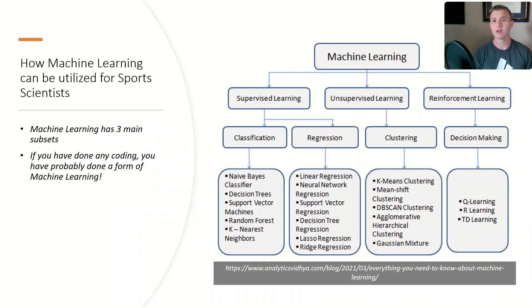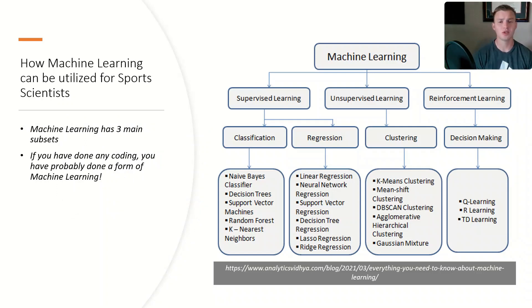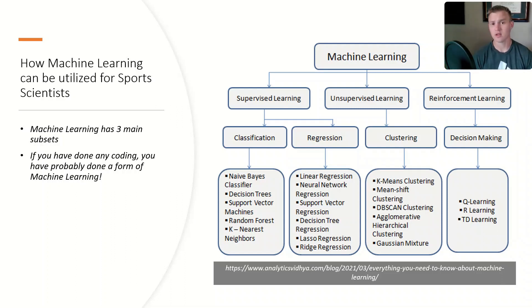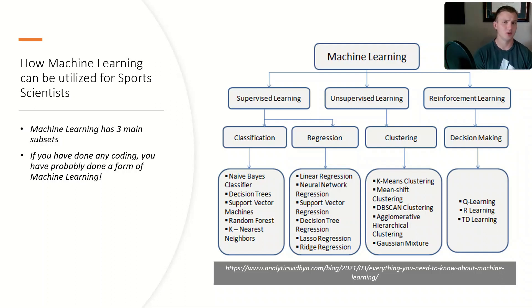Machine learning can be broken down into three main subsets. There's supervised learning, which includes classification and regression. There's unsupervised learning, which includes clustering. And there's reinforcement learning, which includes decision making.